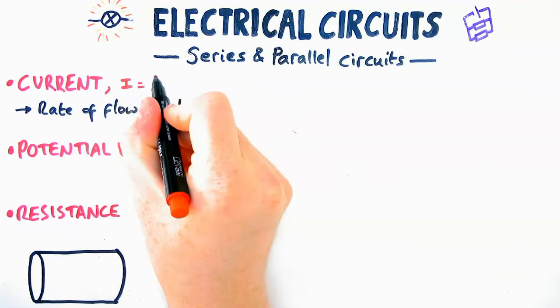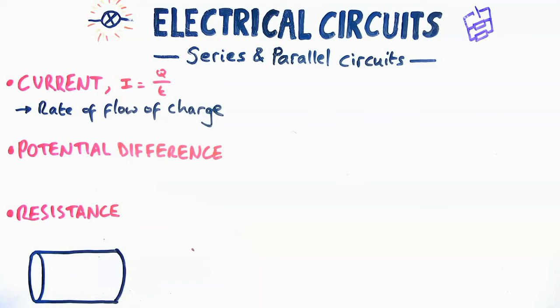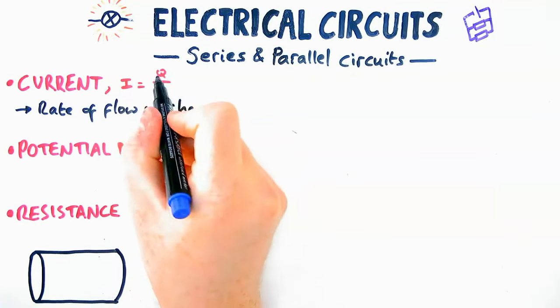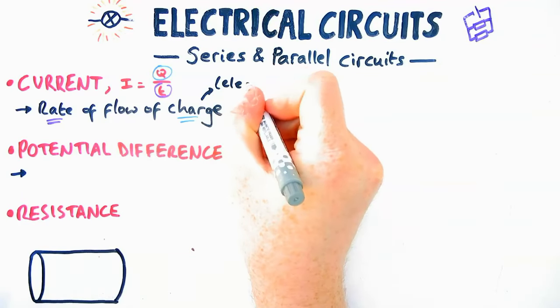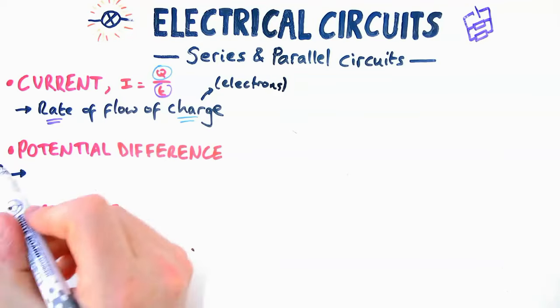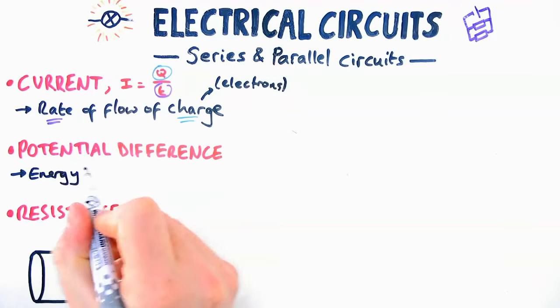So current, usually using the symbol I, is the rate of flow of charge. Q is the symbol for charge, T divided by time means rate, so rate of flow of charge is current. Now usually we are talking about electrons here, it doesn't have to be electrons but in most circuits it will be.